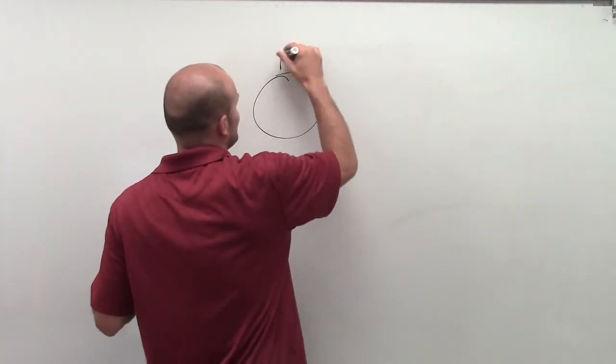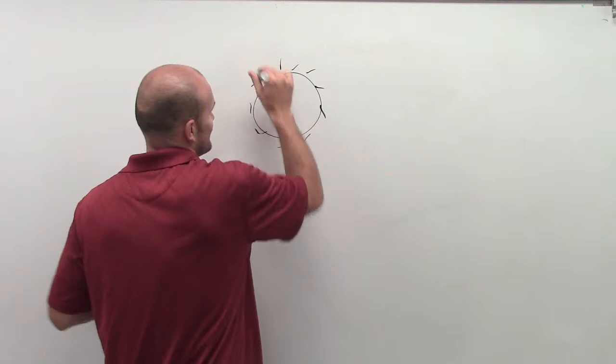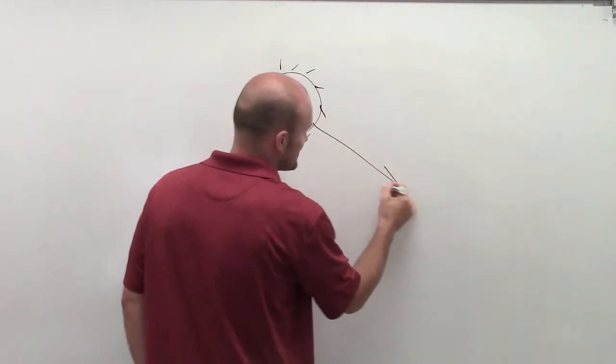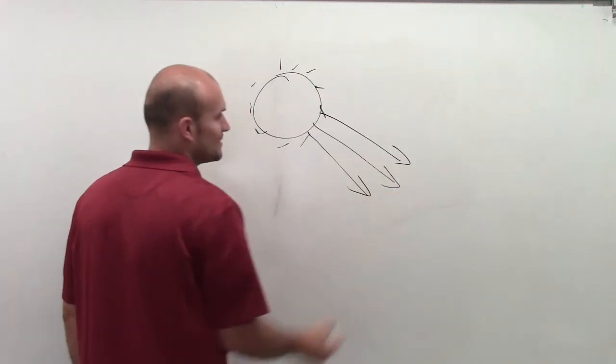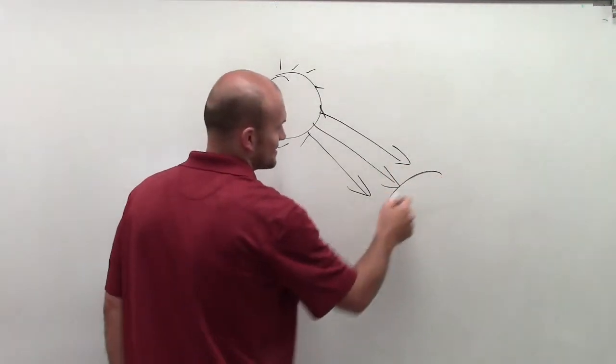So a ray, right? Sun produces rays of sunshine. Looks something like that, right? And here you can say the Earth.